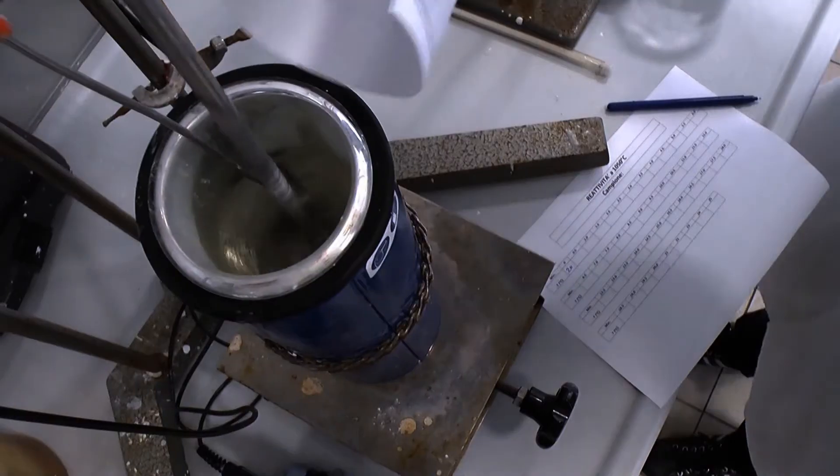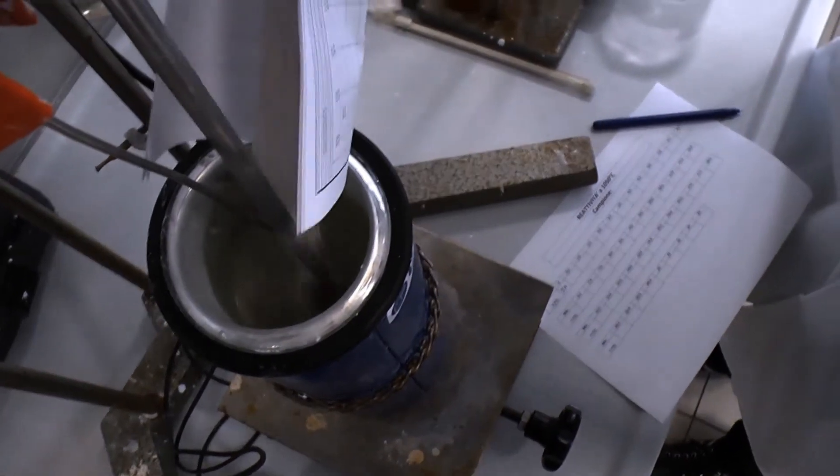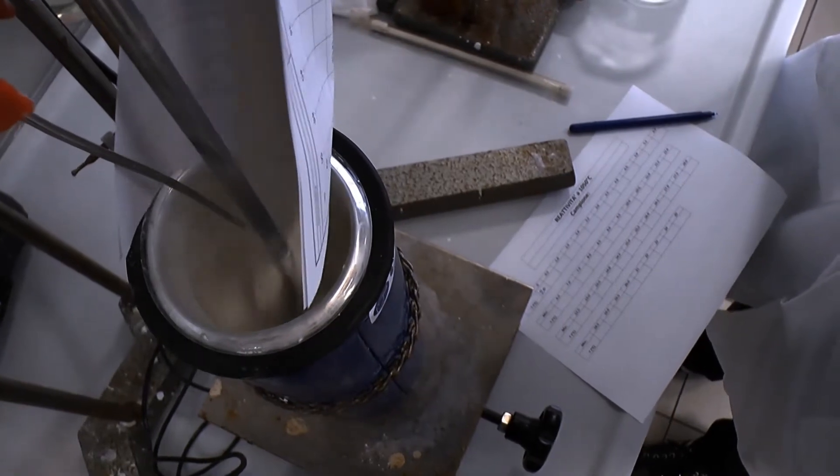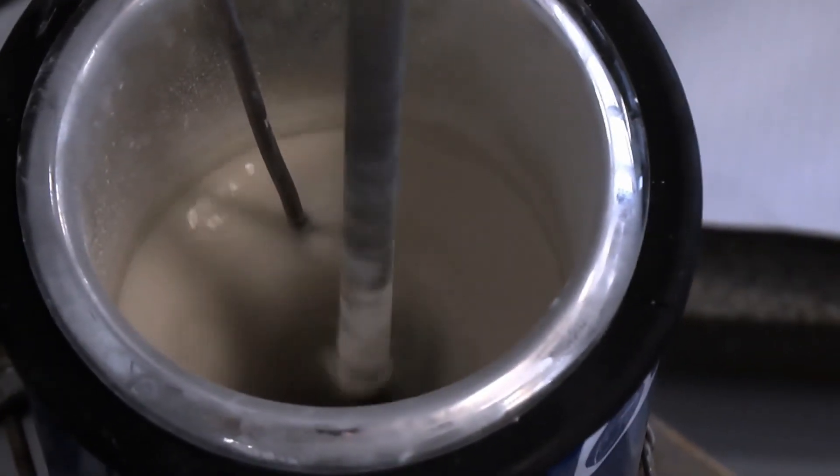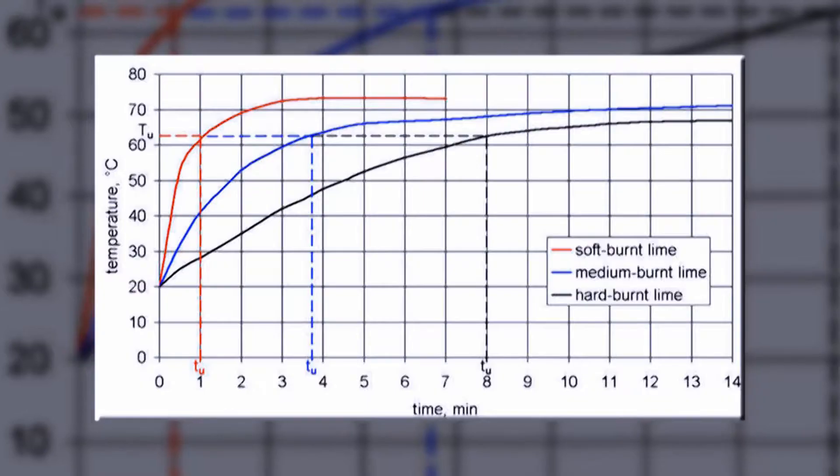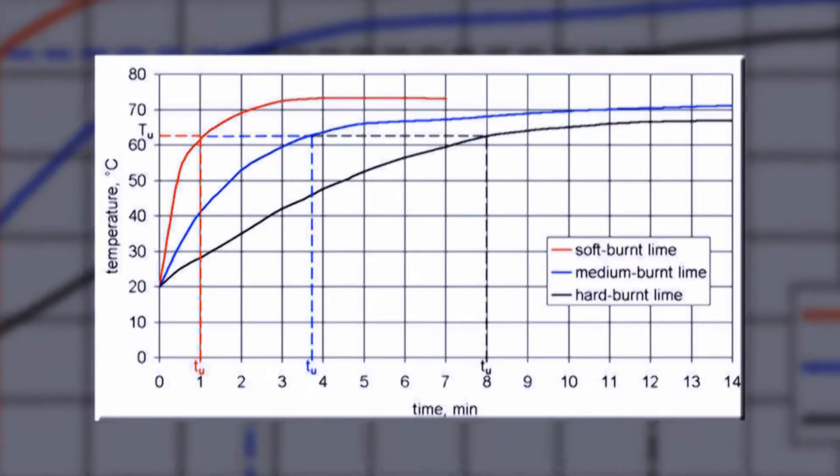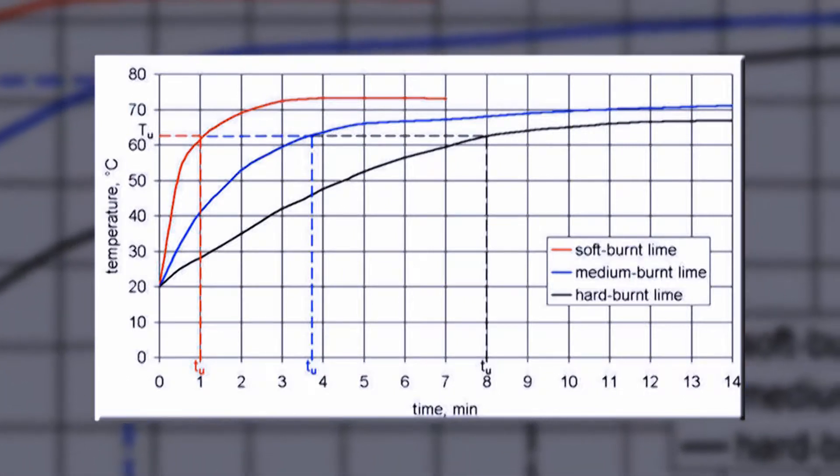As a reminder, T60 is the time in minutes needed to reach a temperature of 60 degrees centigrade. The higher T60 is, the slower the reactivity.